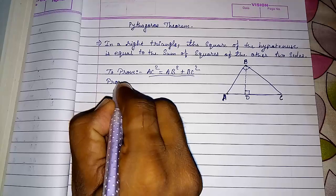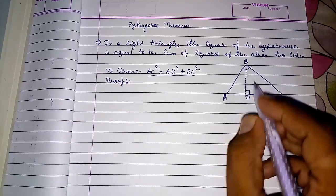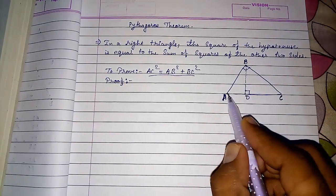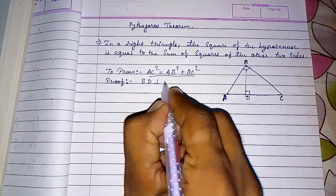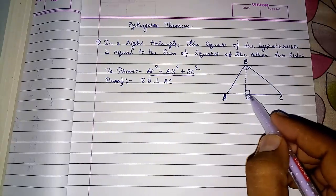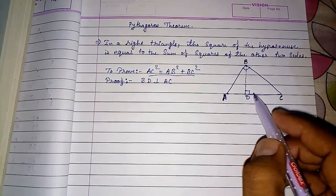Proof: First we have to construct BD perpendicular to AC. So we will get this 90 degrees. This is also perpendicular, 90 degrees.